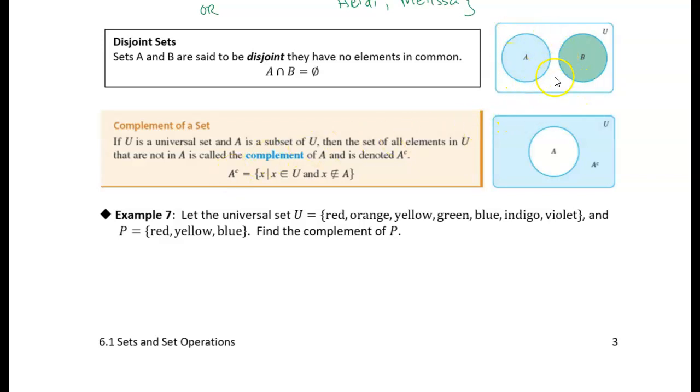You can see I drew a little picture over here. There's two sets, they have no overlapping elements, so they are disjoint. And in set notation, we say that the intersection of A and B is the empty set.